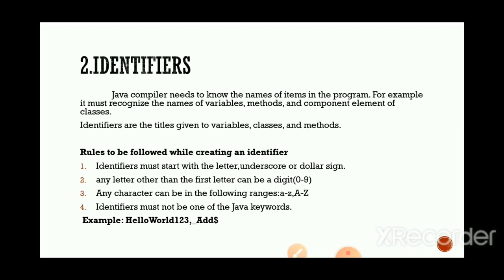These are the names of items in the program. The item you are going to name may be a variable, a class, or a method — if you give it a name then only you can identify it. That is what an identifier is. The Java compiler needs to know the names of items in the program, and for that recognizing purpose we use identifiers.